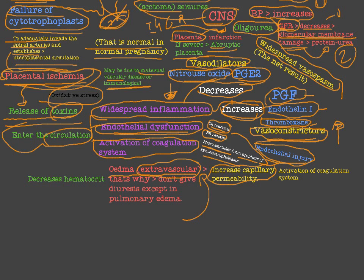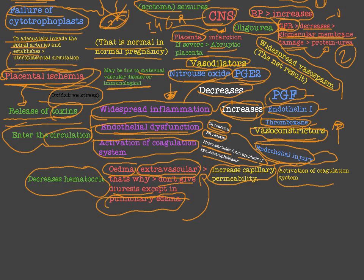The edema in preeclampsia is extravascular edema, caused by leakage of fluid from the intravascular to the extravascular compartment. Previously, edema was required to diagnose preeclampsia, but not anymore. The edema of preeclampsia is generalized — affecting the face, head, and hands — unlike normal pregnancy edema, which is mainly in the lower limbs. This is why we don't give diuretics in preeclampsia, except in cases of pulmonary edema. The resulting hypovolemia leads to decreased hematocrit.